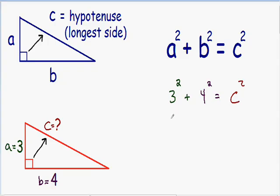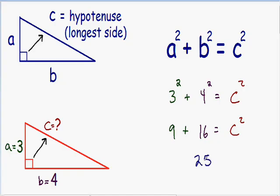Now if we simplify this, on the left we have three squared, which is three times three, which is nine. Plus four squared, which is four times four, which is 16. And this is all equal to c squared. Simplifying further, nine plus 16 equals 25, and that is all equal to c squared.